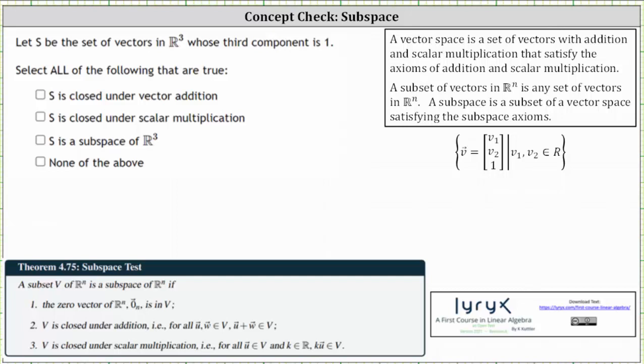Let S be the set of vectors in R3 whose third component is one, which means all the vectors in the subset S are in the form V sub one, V sub two, one, where V sub one and V sub two are real numbers.